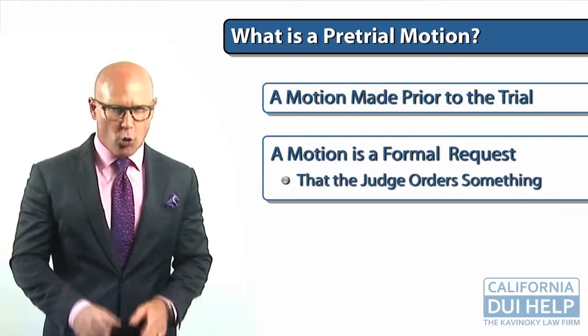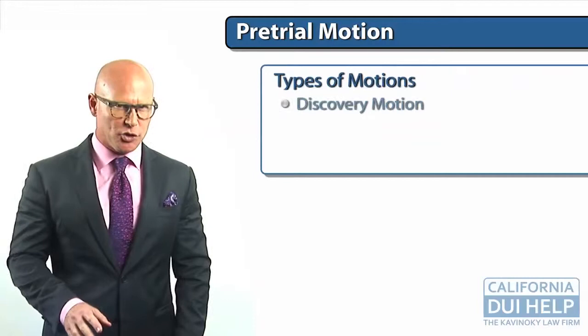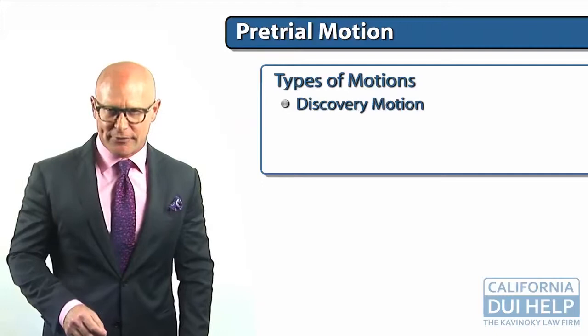Examples of common motions in a criminal case include discovery motions, where you're trying to force the prosecutor to turn over additional evidence that they haven't given you yet, or a special type of discovery motion called a Pitchess motion.